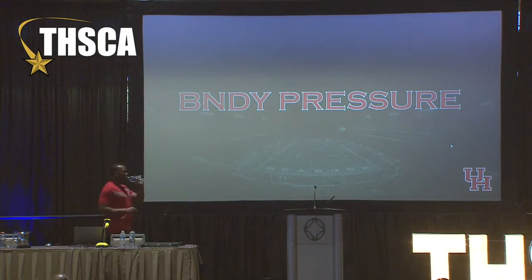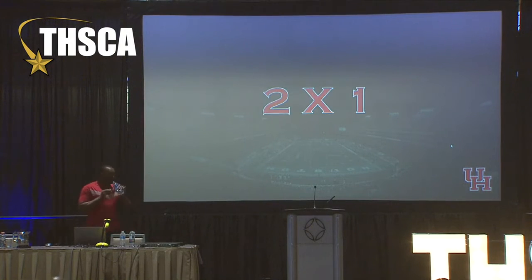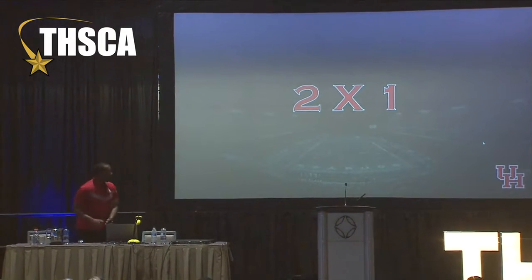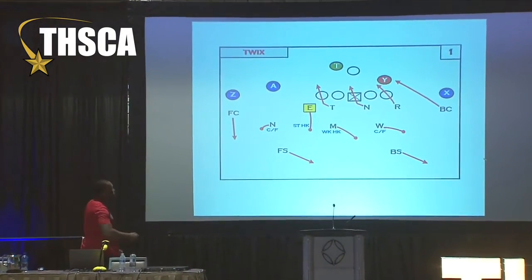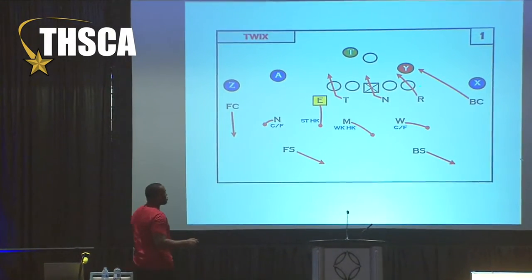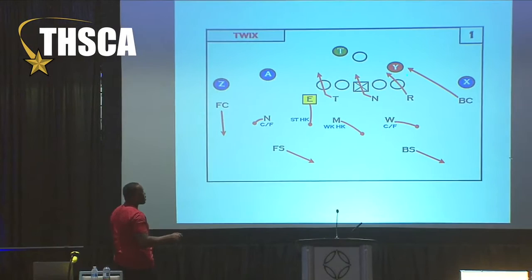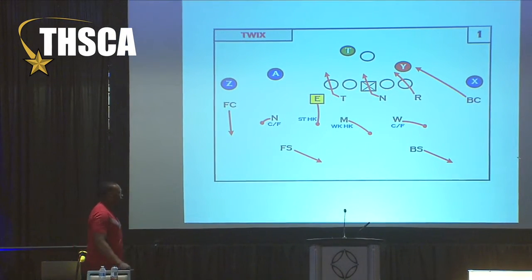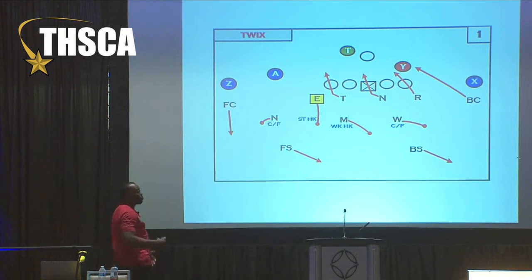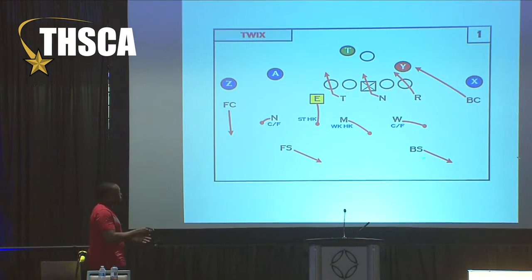Any time we bring the boundary corner — like we talked about when we're teaching this to our kids — the drops underneath are the same. The biggest thing is we have to replace the pressure guy with the first open DB. Right here we're over the top with the boundary corner; he's playing a deep third. Will's got a push curl-flat, Mike strong and Mike's weak hook, dropping strong hook.